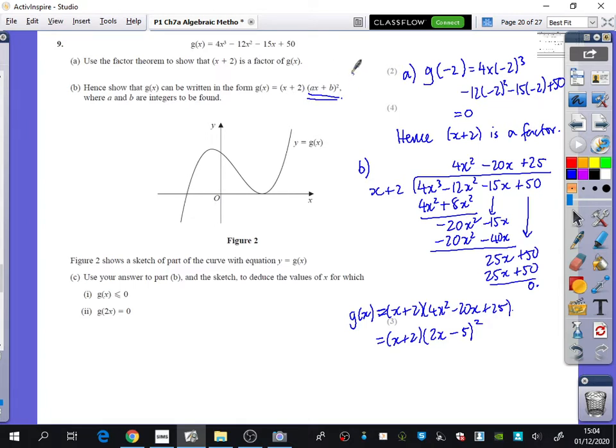It was nice that they told us that it was something that was squared, because it was really easy. You just did the square root of that, the square root of that, and made it negative.